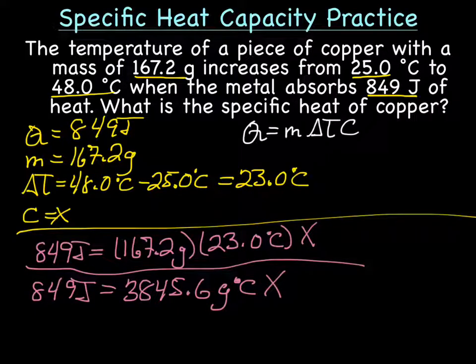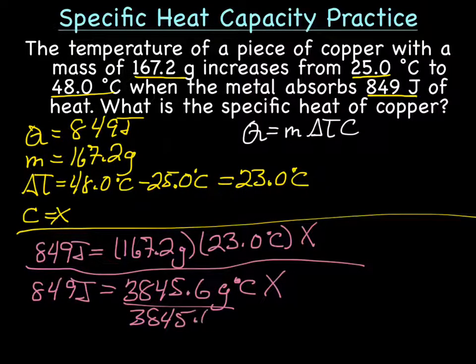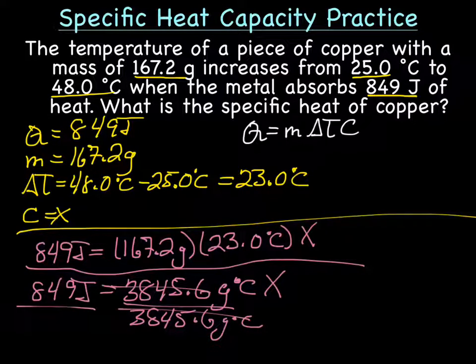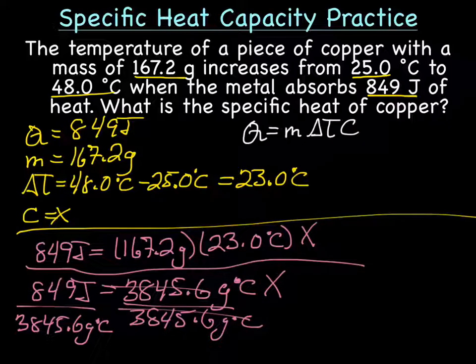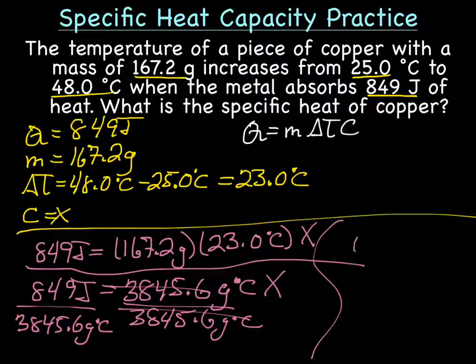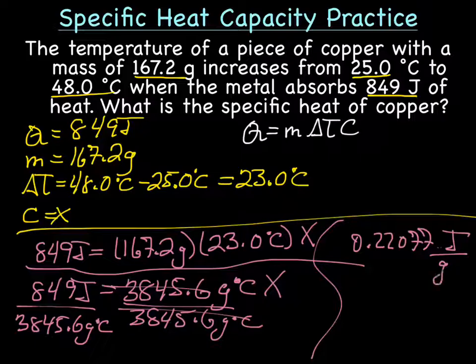And then to solve for X, we will divide by whatever's next to the X. So we'll divide by 3845.6 grams degrees Celsius, and that gives us 0.22077 joules per grams degrees Celsius.